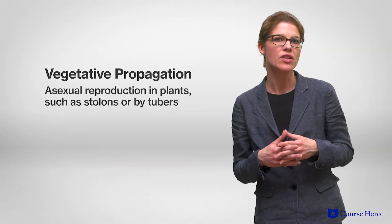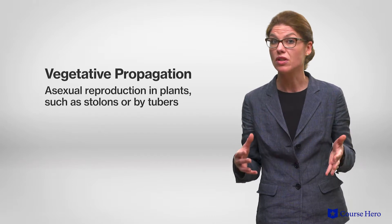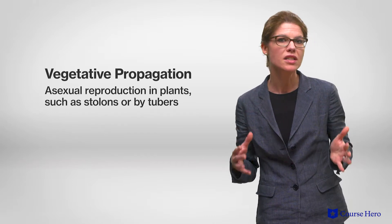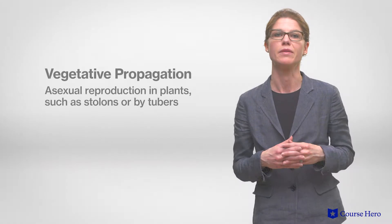Vegetative propagation is a form of asexual reproduction that doesn't involve flowers or seed production. Instead, a new plant grows from a vegetative part, usually a stem, of the parent plant. Vegetative reproduction from a stem usually involves the buds. Instead of producing a branch, the bud grows into a complete plant which eventually becomes independent.